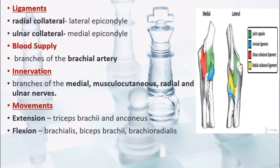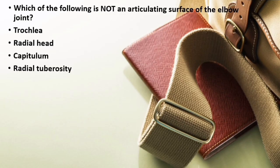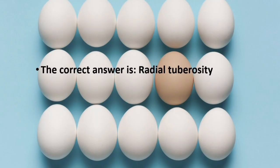The orientation of the bones producing a hinge-type synovial joint allows for extension and flexion of the forearm. Extension is produced by triceps brachii and anconeus. Flexion is produced by brachialis, biceps brachii and brachioradialis. Quiz: Which of the following is not an articulating surface of the elbow joint? Trochlea, radial head, capitulum, or radial tuberosity? The correct answer is radial tuberosity.